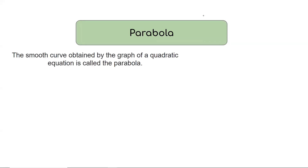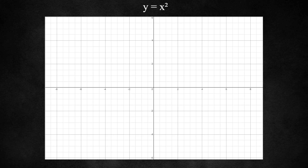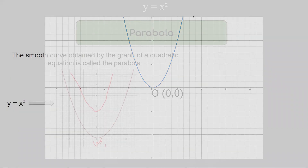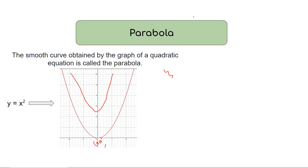Parabola. It is a smooth curve obtained by the graph of a quadratic equation — that is called a parabola. Simply, the graph of a quadratic equation, when you plot it, gives a parabola. For example, y equals x squared — this is a parabola.